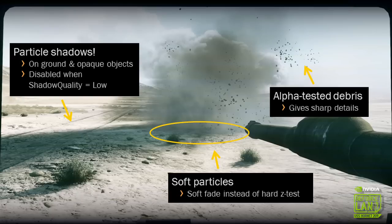One major innovation we've done — an experiment with Frostbite 2 — is particle shadows. This particle cloud actually casts a shadow on the ground. We have this enabled by default when using medium or higher shadow quality modes in the game, because it can be quite heavy to render, but it looks really remarkable in motion.